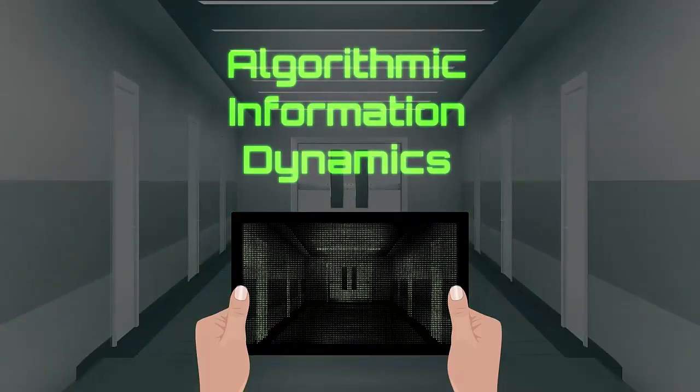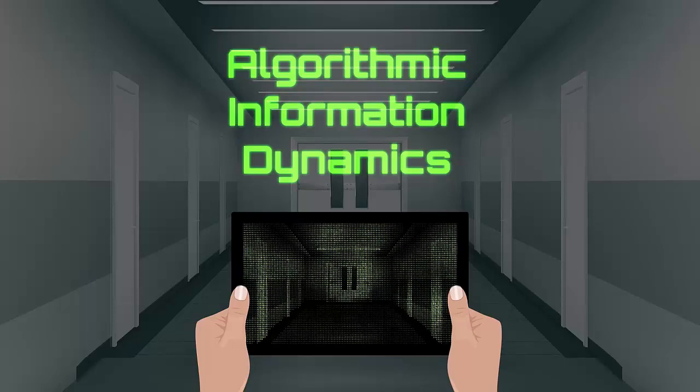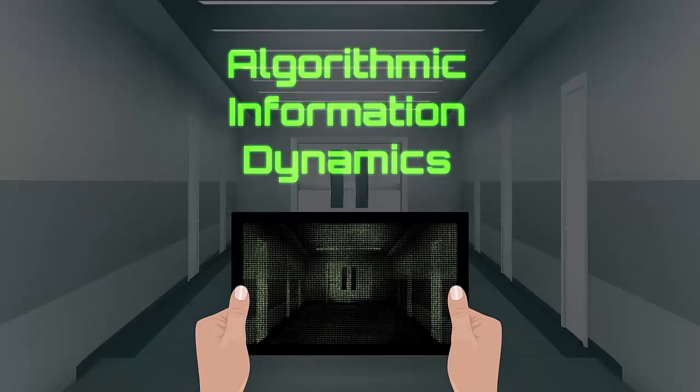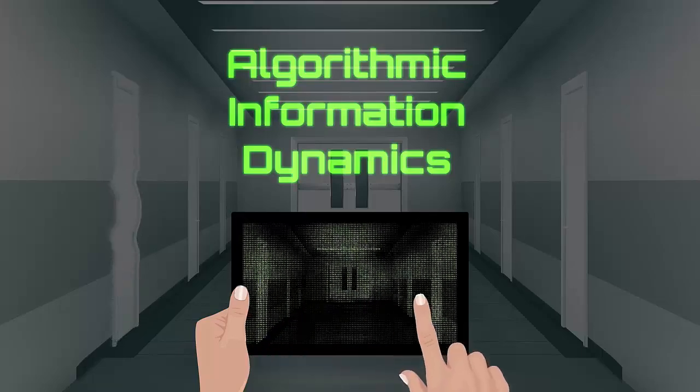Algorithmic information dynamics is a new theoretical and practical framework for exploring the world as if seeing the world through Neo's digitally enhanced eyes.